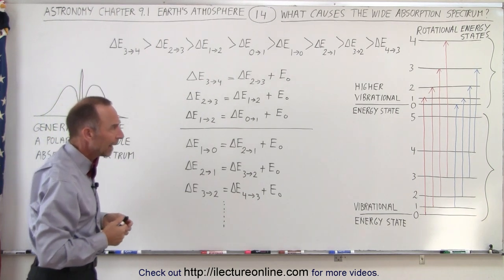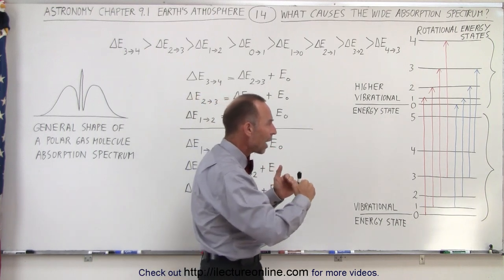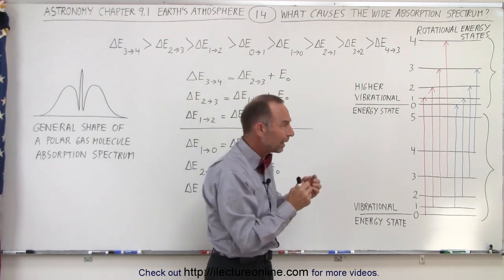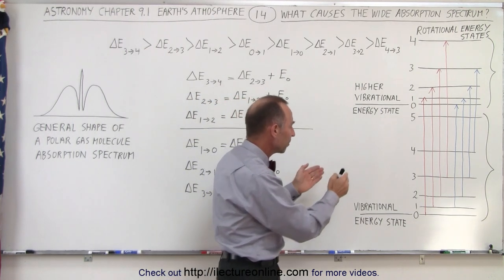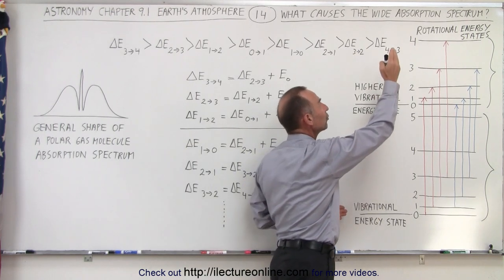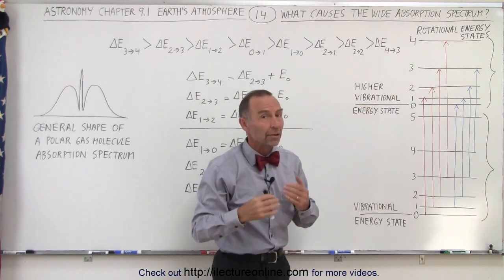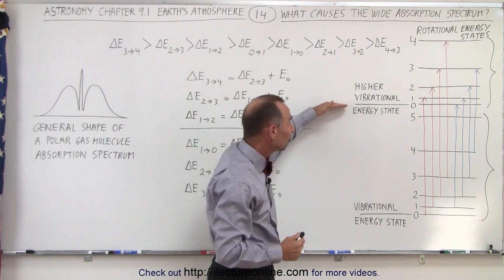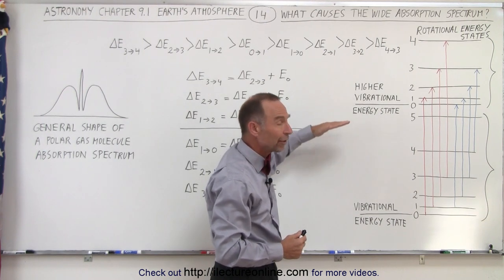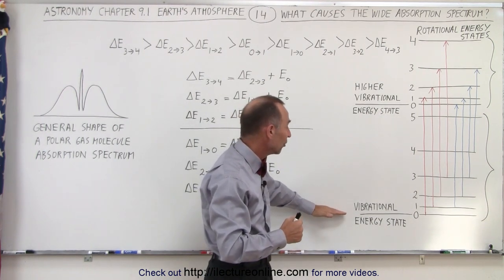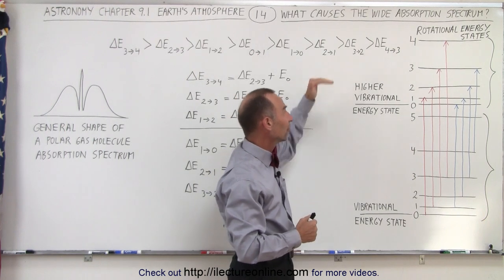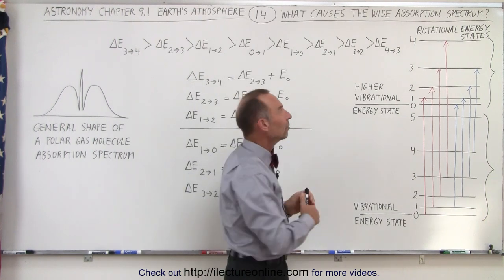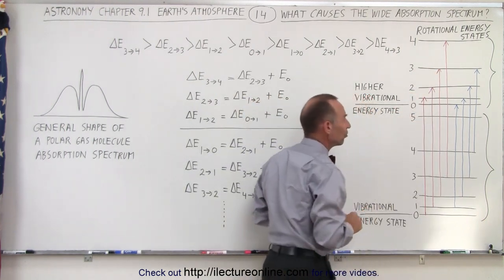It turns out that if we look at how the energy jumps occur, it's usually in a combination of vibrational energy states and rotational energy states. The vibrational energy states increase in quantum states. The amount of energy difference between the various states is fixed, but that's not the case for the rotational energy states.